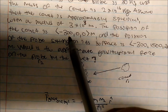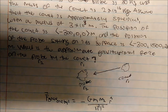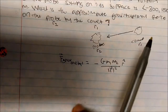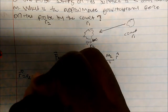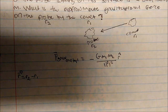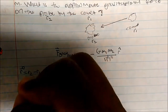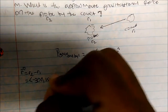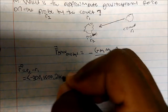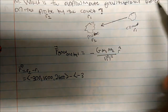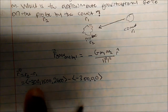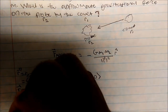The position of the comet is negative 300 in the x direction, and the position of the probe sitting on its surface is negative 300, 1500, and 2600. Therefore, the relative position vector R equals R2 minus R1. R2 is the probe, so this would be negative 300, 1500, 2600 minus negative 300, 0, 0. We're taking R2 minus R1 to get the relative position vector R.